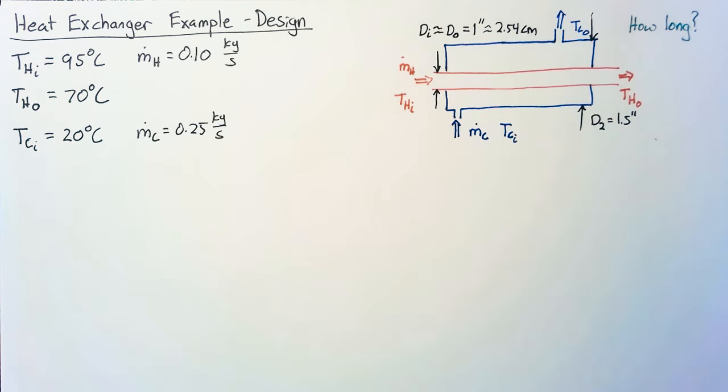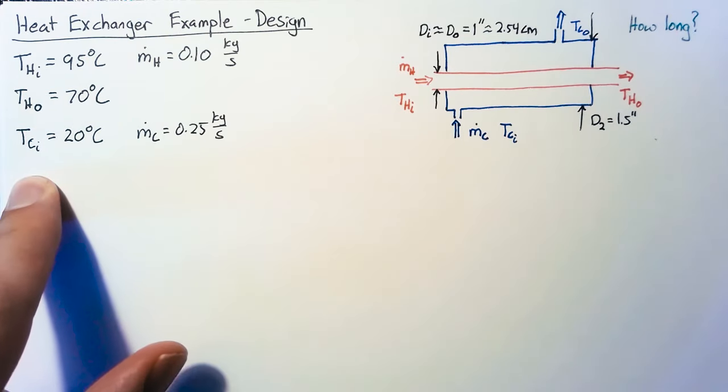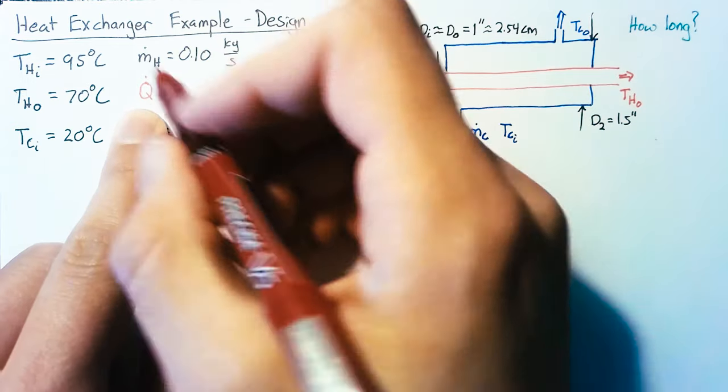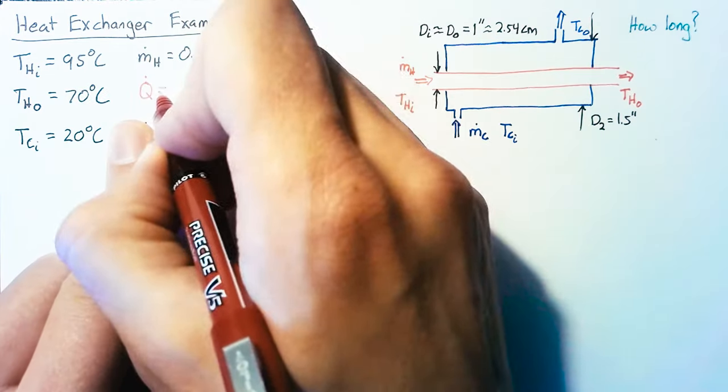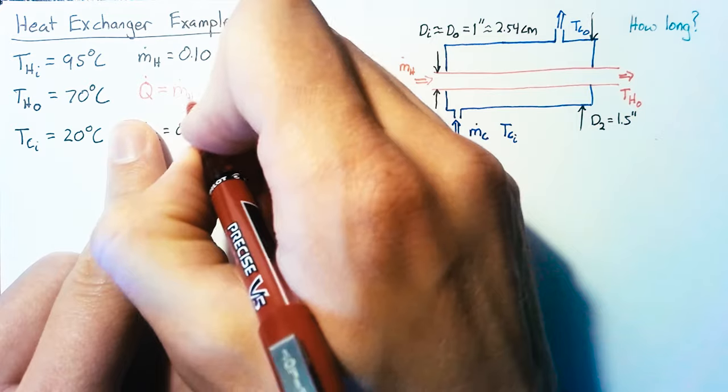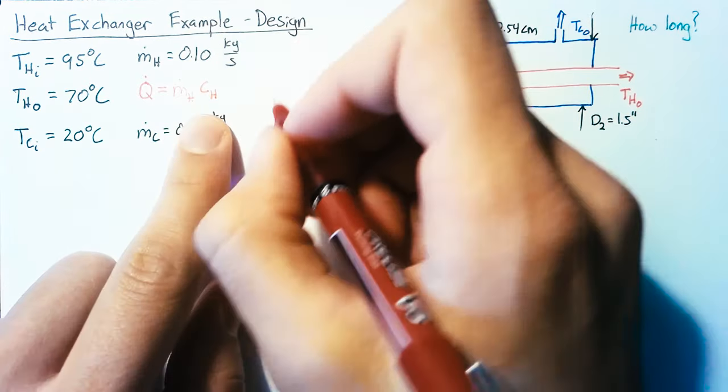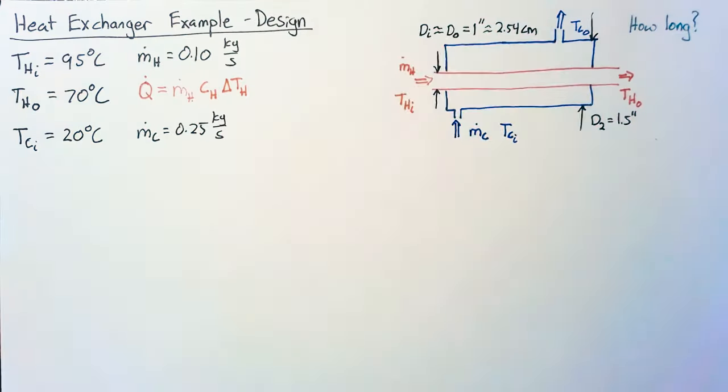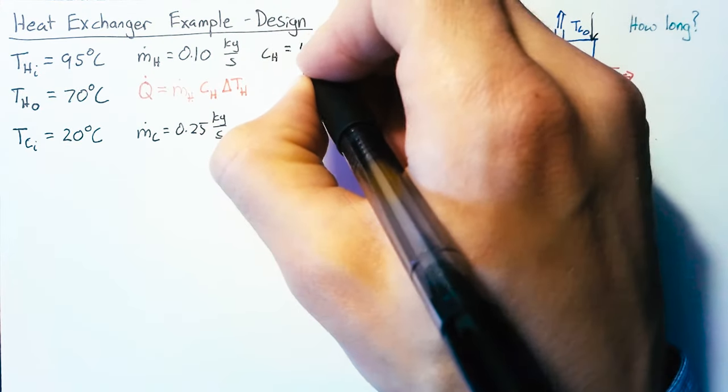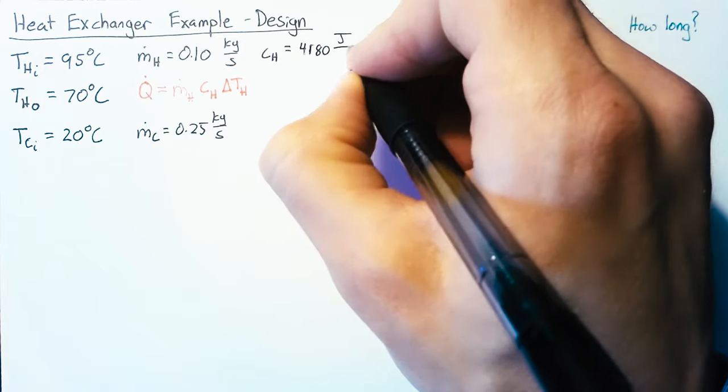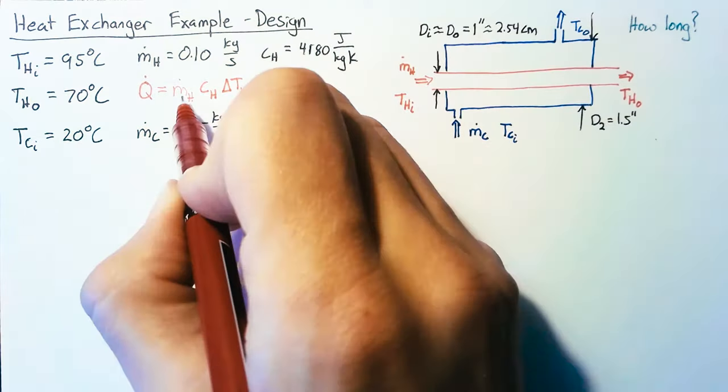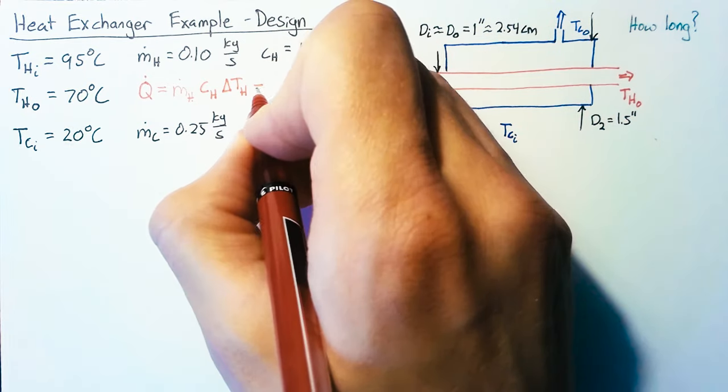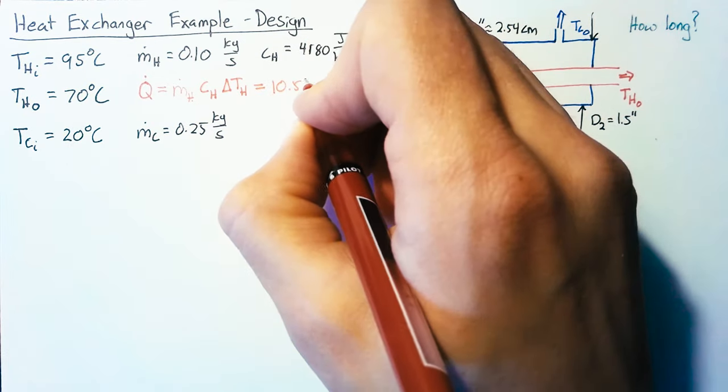To start off, we first need to figure out what this outlet temperature is going to be. We start with the heat transfer rate Q = m_dot_h * c_h * ΔT. For water we're going to say our specific heat is 4180 joules per kilogram Kelvin. Plugging in our m_dot, specific heat, and delta T of 25 Kelvin, we end up with Q_dot of 10.5 kilowatts.